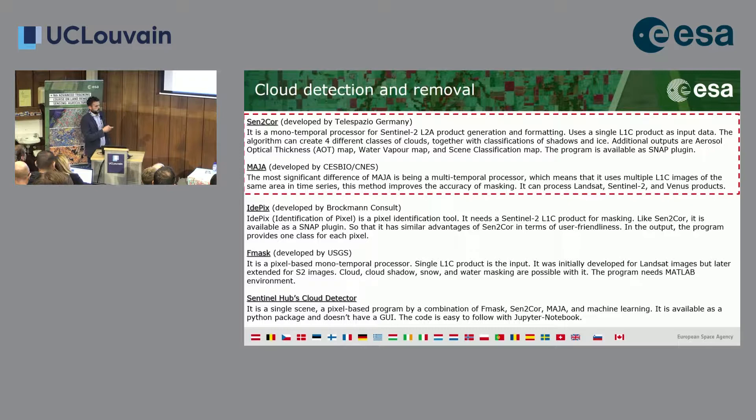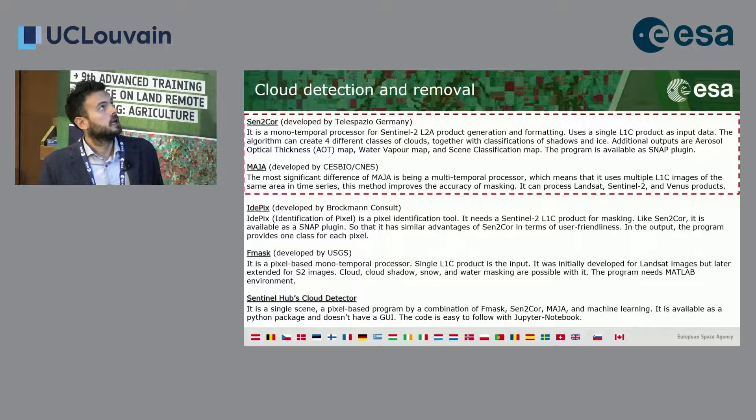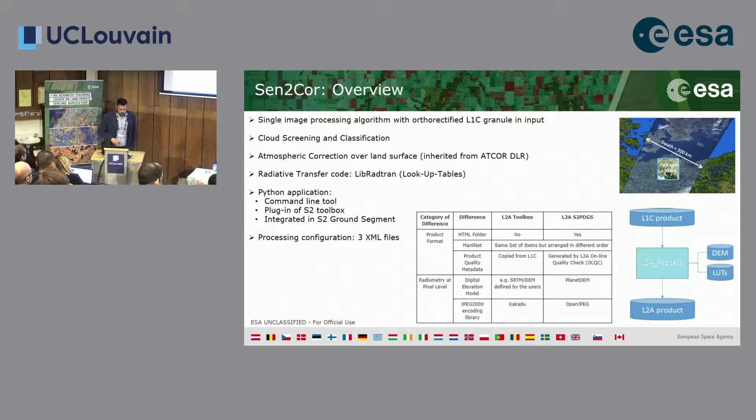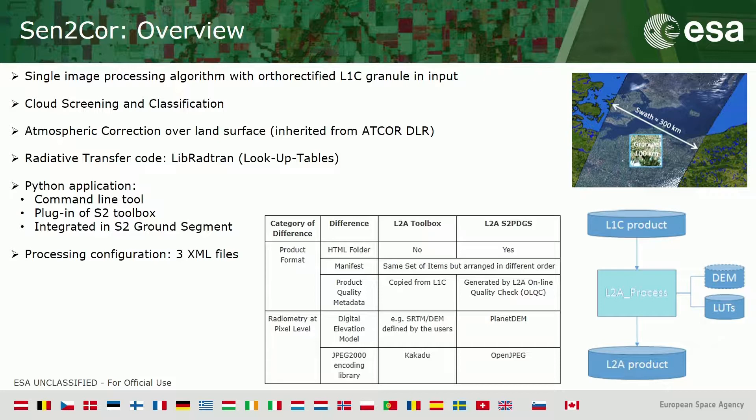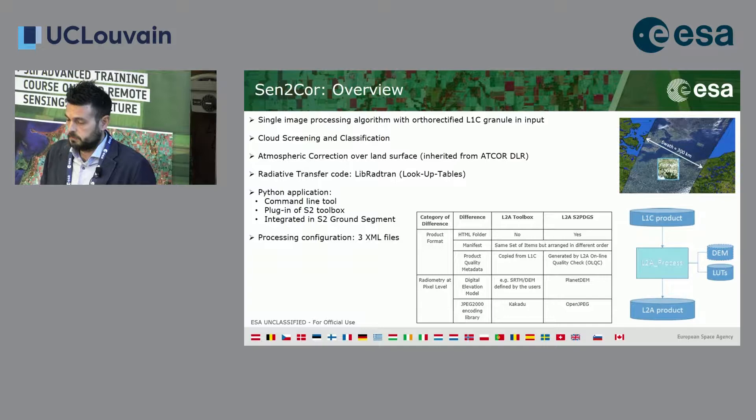Focusing on Sen2Cor and MAJA: Sen2Cor is a single-image processing algorithm taking Level-1C as input. It includes cloud screening and classification, and atmospheric correction over land surface using ATCOR developed by DLR and lookup tables from libRadtran.